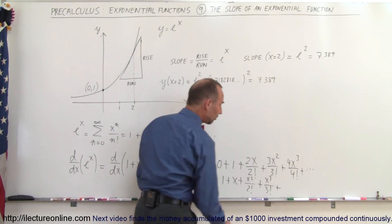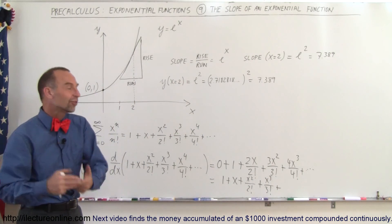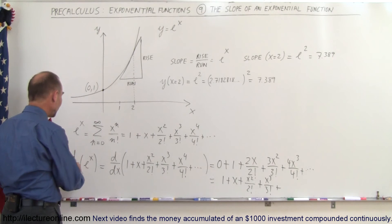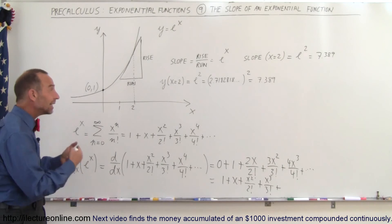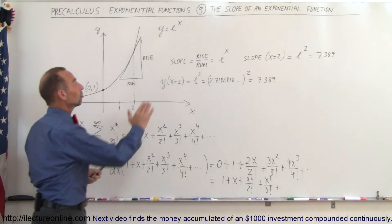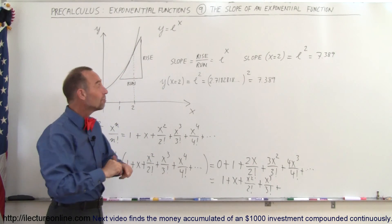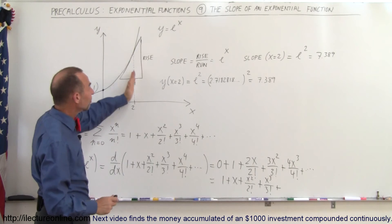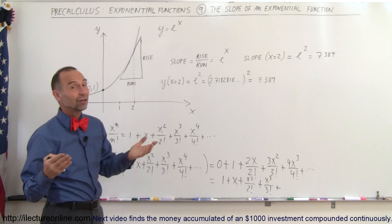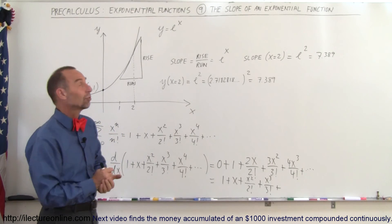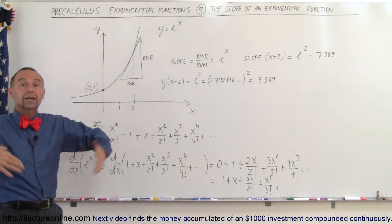Notice that if we simplify, this becomes 1 plus x plus x squared over 2 factorial plus x cubed over 3 factorial — the exact same infinite series. When you take the derivative of the original function, you get the exact same function again, which proves that the derivative of the natural exponential function e to the x is e to the x. The slope equals the function itself for any value of x.